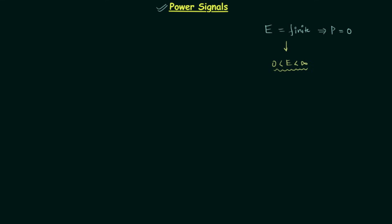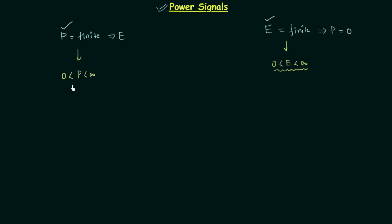Now let's talk about power signals. A signal is said to be a power signal if and only if its average power P is finite. Comparing energy signals and power signals: in energy signals total energy is finite, while in power signals average power is finite. The range of average power satisfies 0 < P < infinity, since the modulus in the formula ensures it cannot be negative.